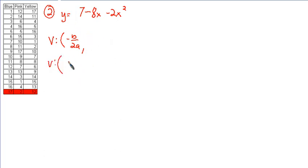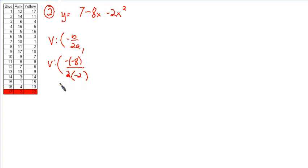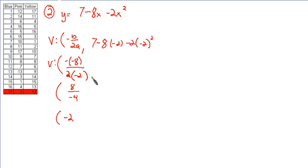The vertex will be at negative b. Negative b would be negative 8, because negative 8 is in front of the x term, over 2a. A is not just the first number we see but the number in front of x squared, and that would be negative 2. So 8 over negative 4 gives negative 2. Now we put that into the function: 7 minus 8 times negative 2 minus 2 times negative 2 squared. That's 7 plus 16. Negative 2 squared is 4, times negative 2 is negative 8. So 16 minus 8 is 8, plus 7 is 15.